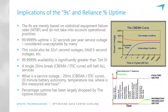Anything more than a 20-millisecond outage is going to take out pretty much the entire IT load — certainly a 25-millisecond outage. And yet in the industry we continue to talk about percentage uptimes in terms of the nines without really understanding what it means. This also explains why the Uptime Institute dropped percentage uptime, and that was some time ago.